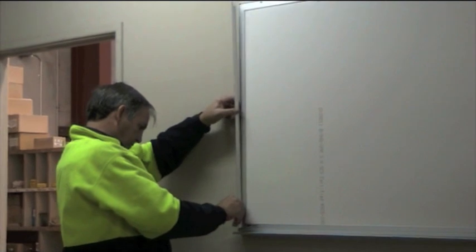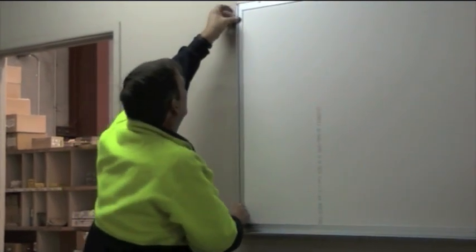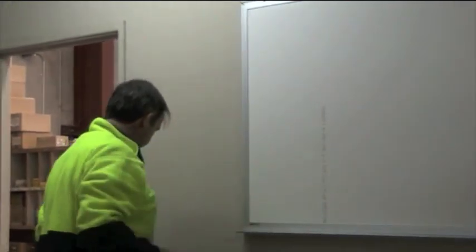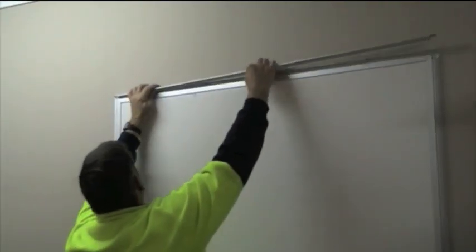Once you have finished screwing the board onto the wall, clip the infill back into position, working from one side of the board to the other. Once this is done, the board is successfully installed.